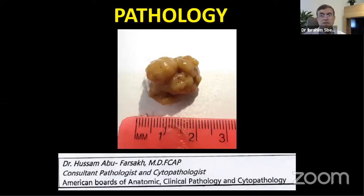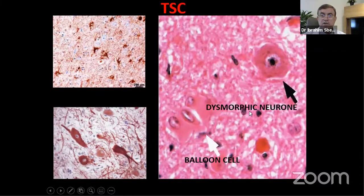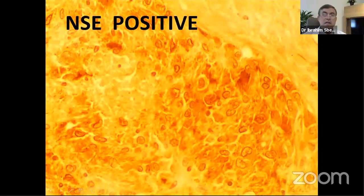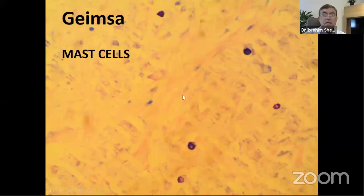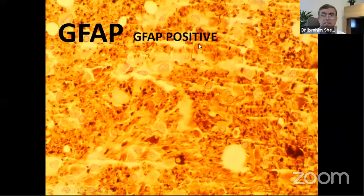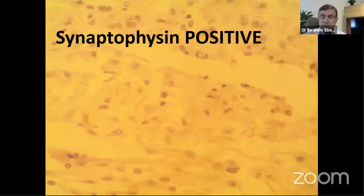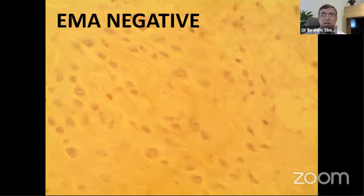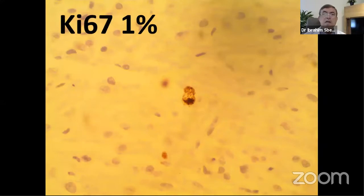Pathology performed with colleague Dr. Salma Farsakh shows dysmorphic neurons and balloon cells with fatty adipose tissue. Immunohistochemistry: NSE is positive, GFAP is positive, synaptophysin is positive, S100 is positive, EMA is negative, and Ki-67 is usually low, confirming these are benign lesions.